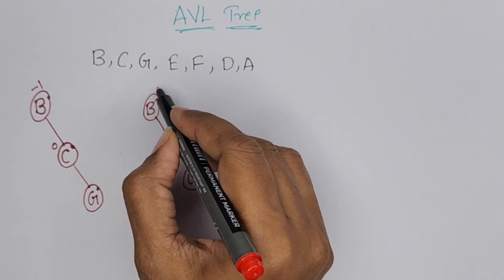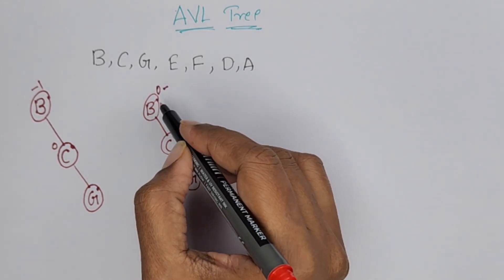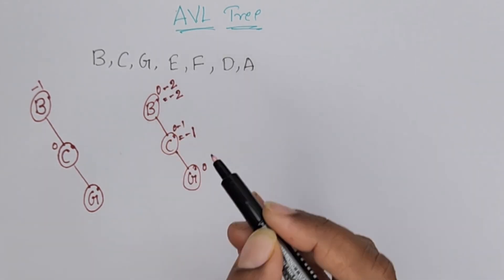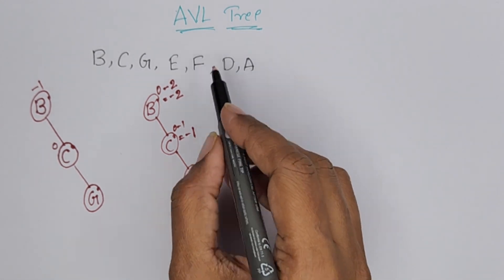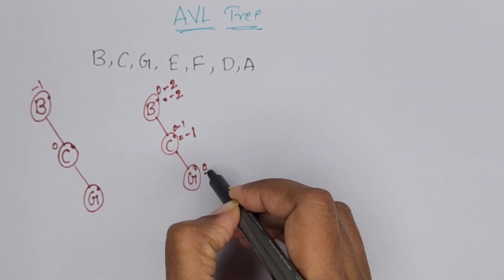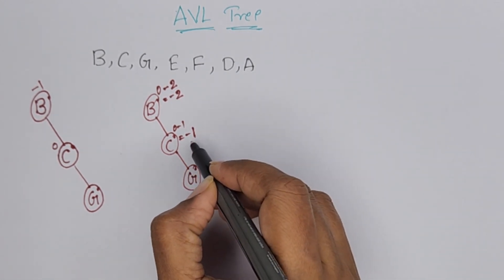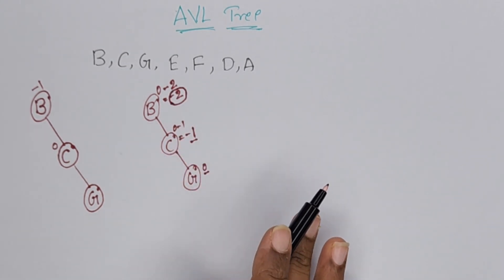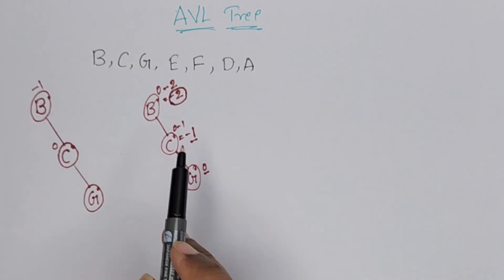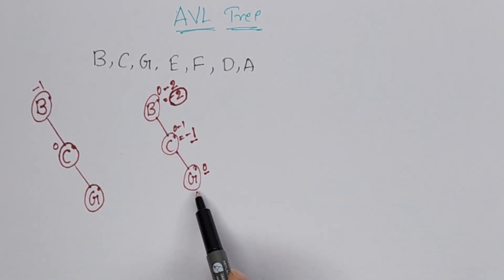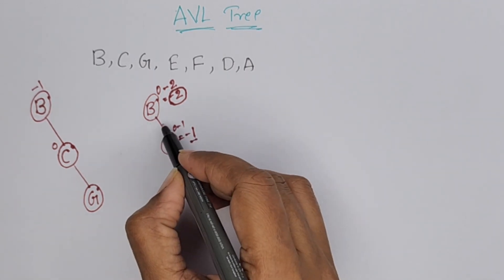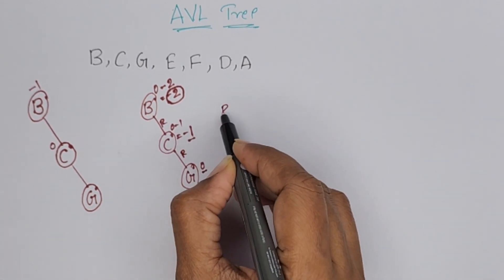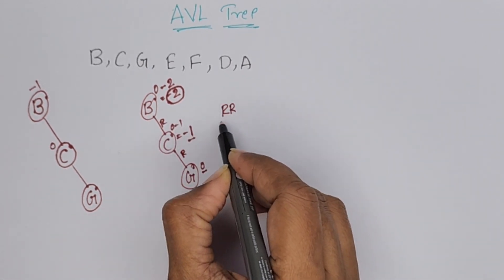For B, left subtree height is 0, right subtree height is 2. 0 minus 2, it is minus 2. AVL balance factor can be 0, 1, or minus 1. If it is minus 2, it is unbalanced. It is unbalanced because of adding G. From B, which side was it added? Right, right. So we have to perform RR rotation.